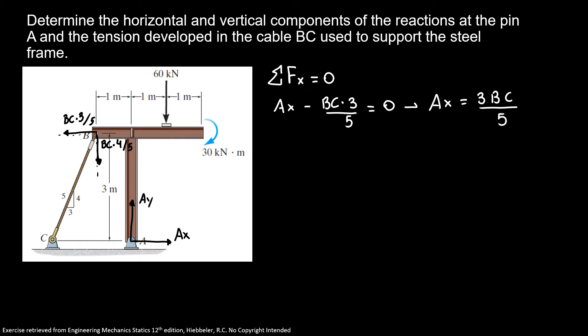Now I'm gonna do my second equation of equilibrium. The sum of forces in y is equal 0. So I have Ay minus 60 kN minus 4BC over 5 is equal 0. So here I have Ay is equal 60 plus 4BC over 5.